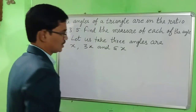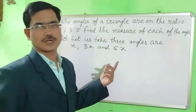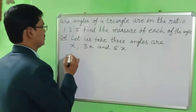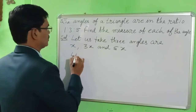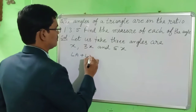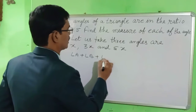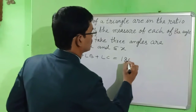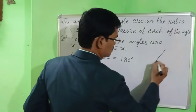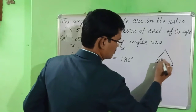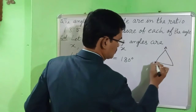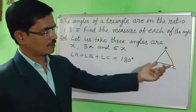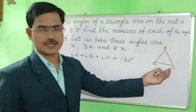We know that the sum of the angles of a triangle is equal to 180 degrees. So we write: angle A plus angle B plus angle C is equal to 180 degrees. According to this, the sum of these angles equals 180.